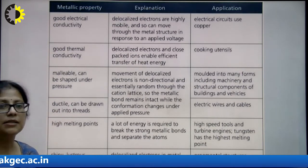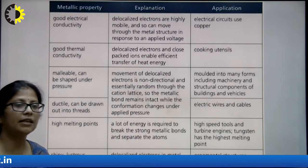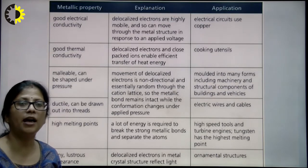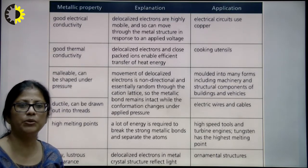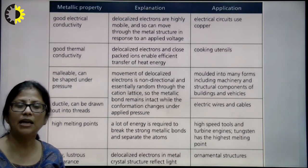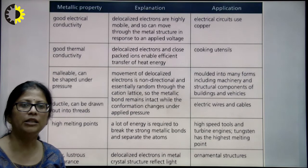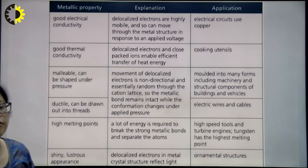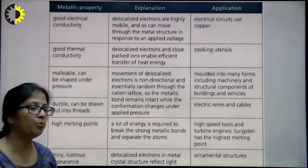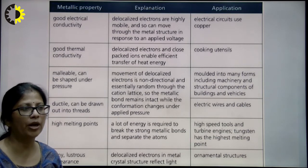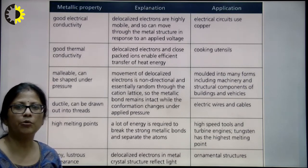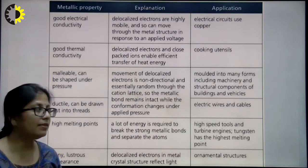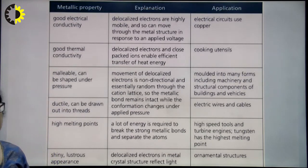Metals are malleable — they can be shaped under pressure — and ductile — they can be drawn out into threads. The movement of delocalized electrons is non-directional and essentially random through the cation lattice, so the metallic bond remains intact while the conformation changes under applied pressure. They are used in different components of buildings and for electric wires. They have high melting points because a lot of energy is required to break the strong metallic bonds and separate the atoms — used in high-speed tools and turbine engines.